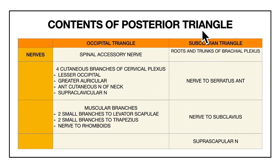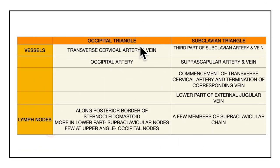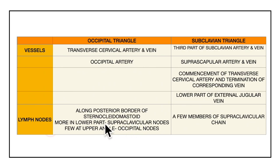To summarize the contents of the posterior triangle: in the occipital triangle, the nerves are the spinal accessory nerve, four cutaneous branches of the cervical plexus, and muscular branches; the vessels are the transverse cervical artery and vein and the occipital artery. In the subclavian triangle, the nerves are the roots and trunks of the brachial plexus, nerve to serratus anterior, nerve to subclavius, and suprascapular nerve; the vessels are the third part of the subclavian artery and vein, suprascapular artery and vein, transverse cervical artery and corresponding vein, and the external jugular vein. Lymph nodes are seen along the posterior border of the sternocleidomastoid — supraclavicular nodes in the lower part, occipital nodes at the upper angle — and a few supraclavicular chain nodes in the subclavian triangle.